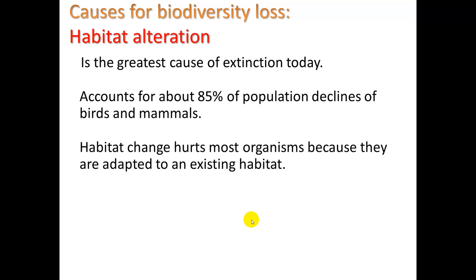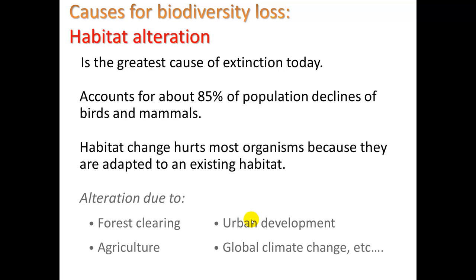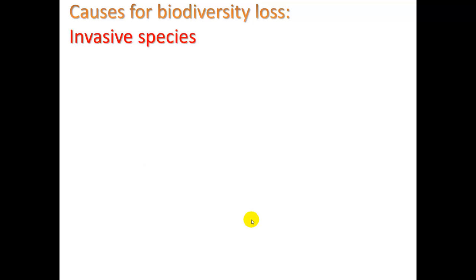Habitat change hurts most organisms because they are adapted to an existing habitat. We alter habitats through forest clearing, agriculture — clearing an area to grow crops — urban development, which we see all the time especially in areas like LA, and global climate change. That's a big one — sort of the silent killer.